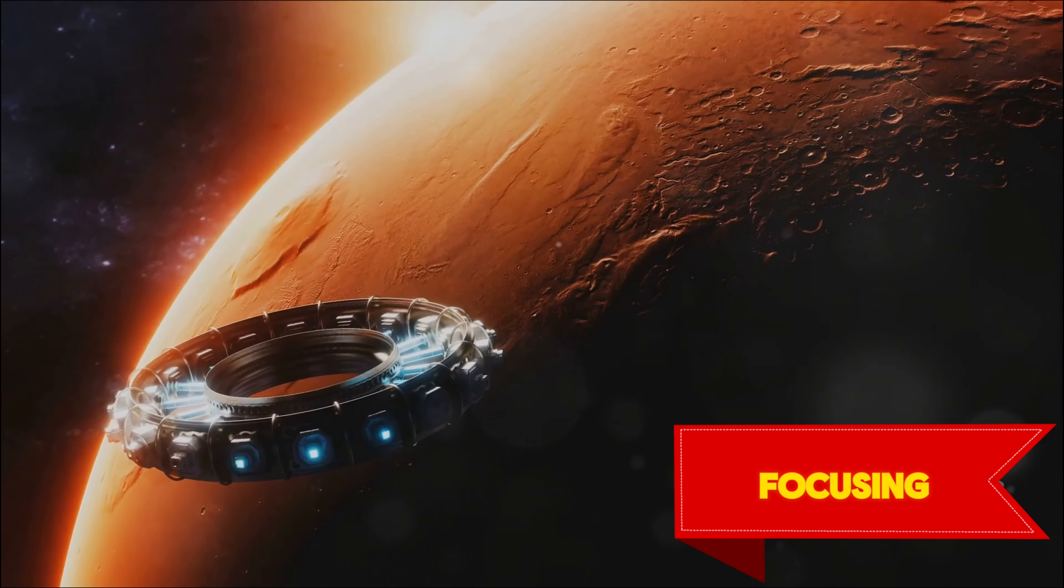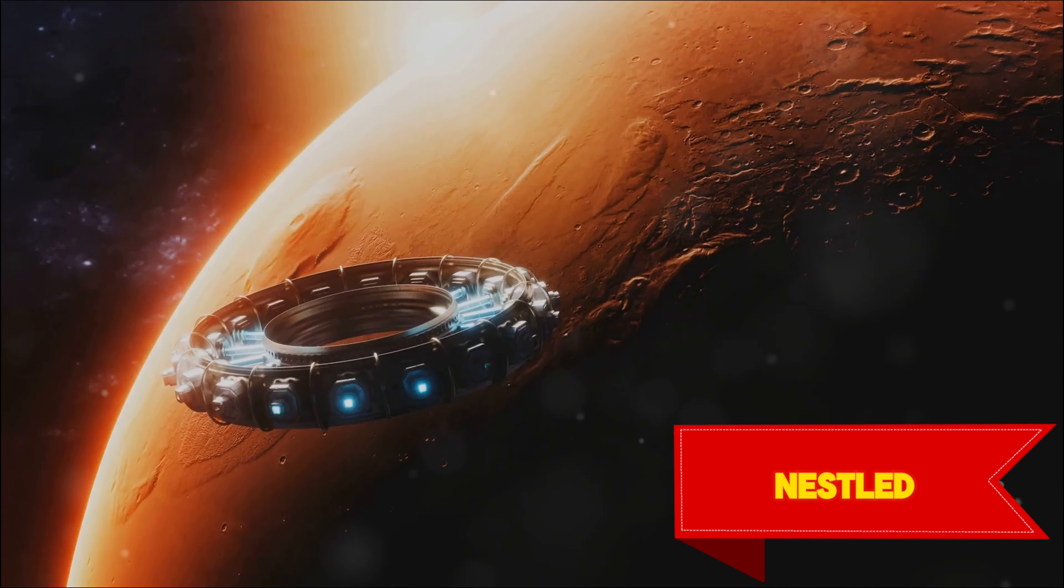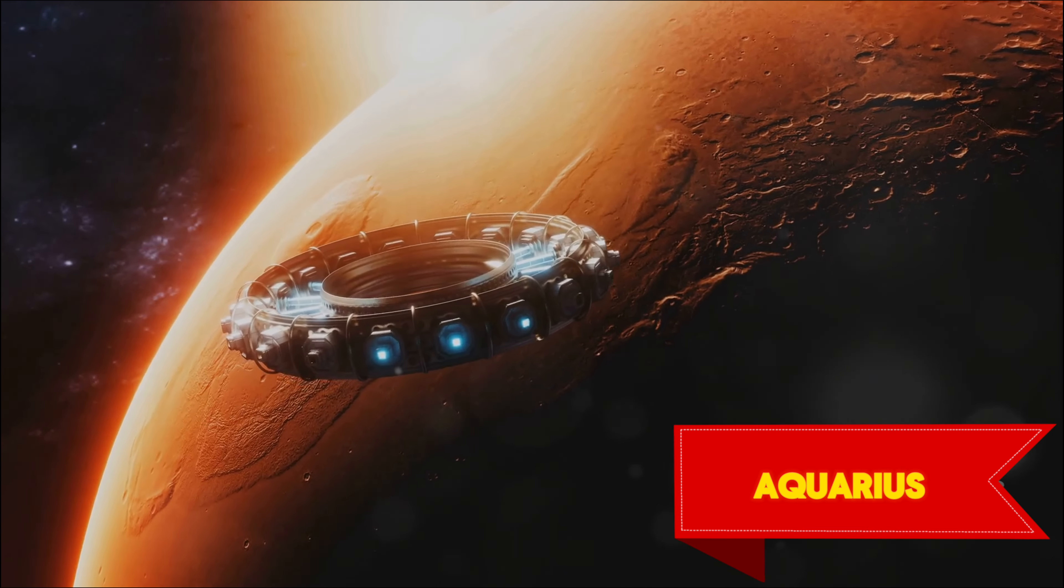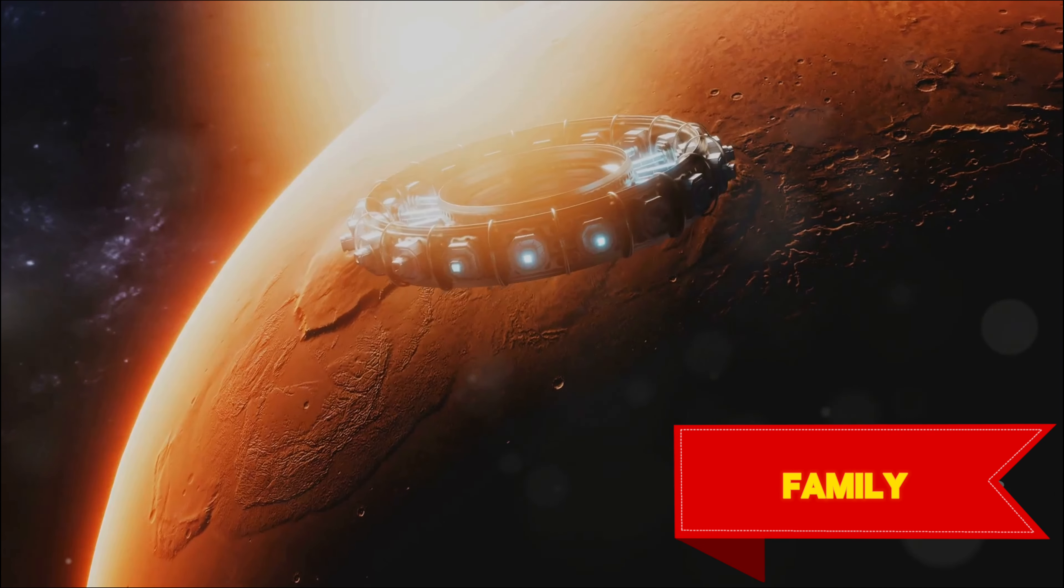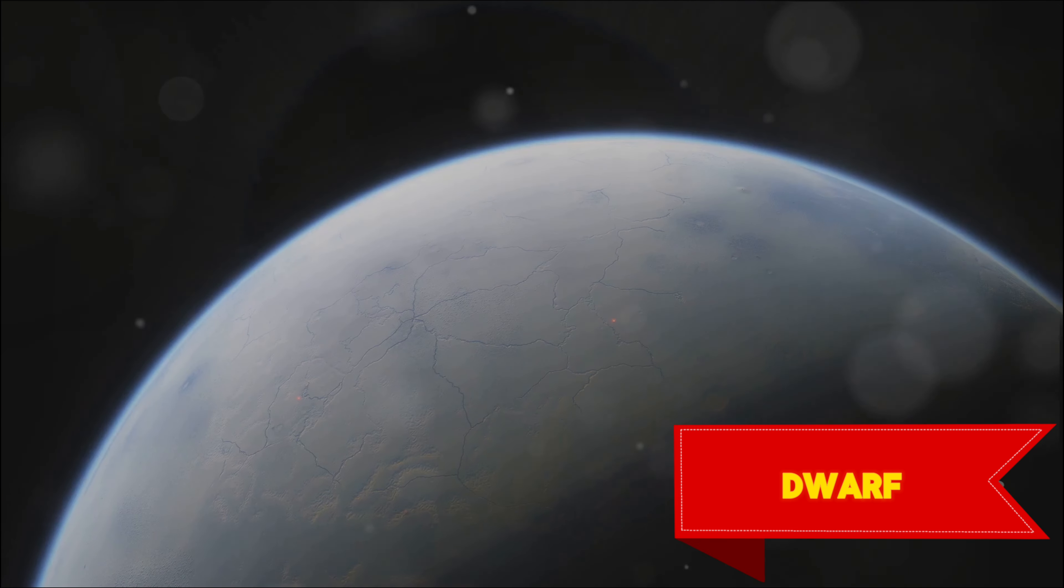Now, we journey to a unique system teeming with possibilities, focusing on TRAPPIST-1e. Nestled within the constellation of Aquarius, the TRAPPIST-1 system is a cosmic marvel, a compact family of seven planets orbiting a cool red dwarf star.